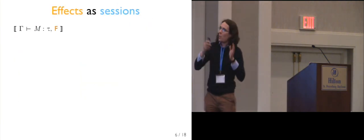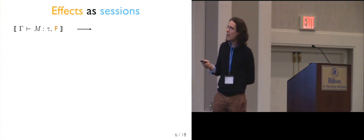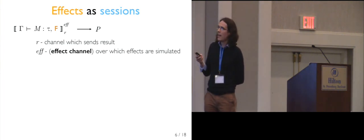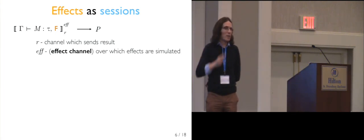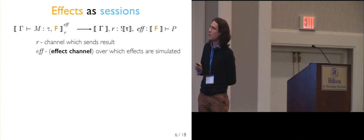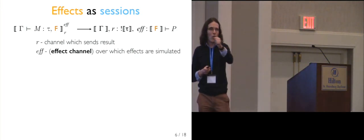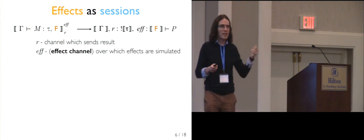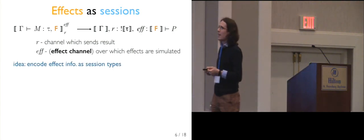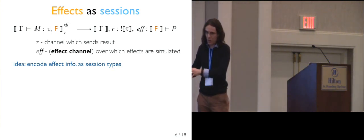In the first part, we take PCF terms parameterized for a particular notion of effect and embed them as a process — both syntactically and in a typed way. Processes don't normally return results, so we nominate a channel R to send our result on. When we type this, we have a channel R on which we send our tau. We also have a special effect channel over which we perform our effectful behavior, whose session type is calculated from the effect information in our PCF terms — so we encode the effect behavior into session types both at the syntax level and at the type level.